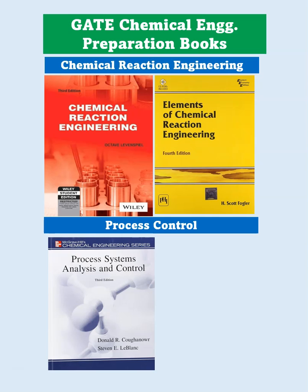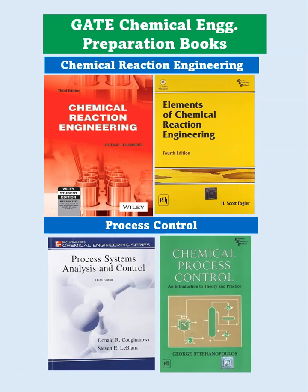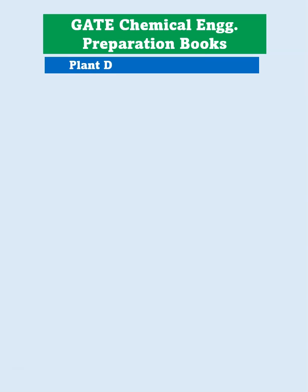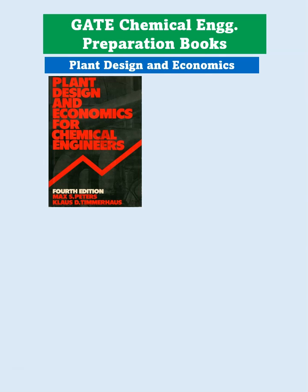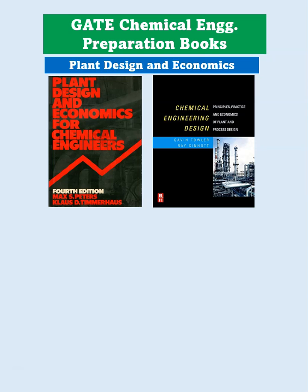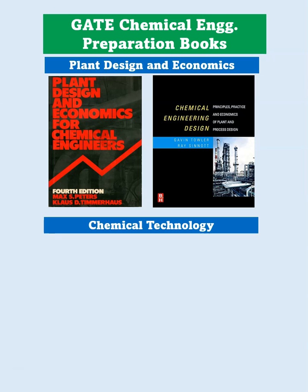For Process Control, you can follow two books: Process Systems Analysis and Control by Coughanowr, and Chemical Process Control by Stephanopoulos. For Plant Design and Economics, follow Peters and Timmerhaus, and Chemical Engineering Design by Towler and Sinnott.